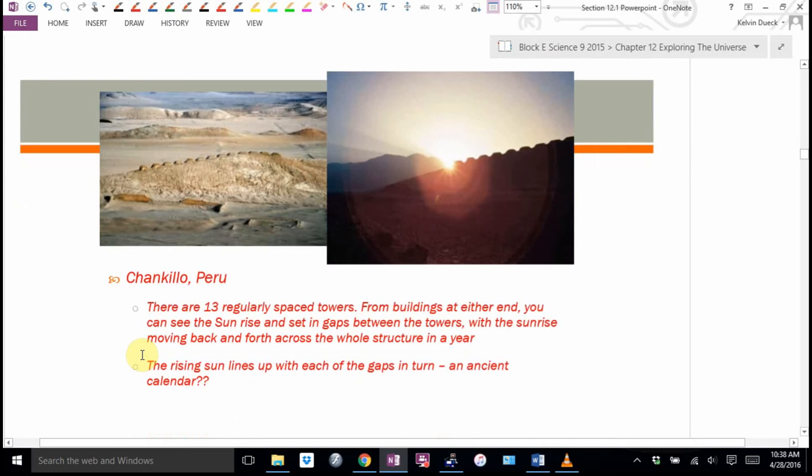This is from Peru. There are 13 regularly spaced towers built on the side of a ridge. From buildings at either end, you can see the sunrise and the sunset in gaps between the towers. With the sunrise moving back and forth across the whole structure in a year. So we suspect maybe this was an ancient calendar.